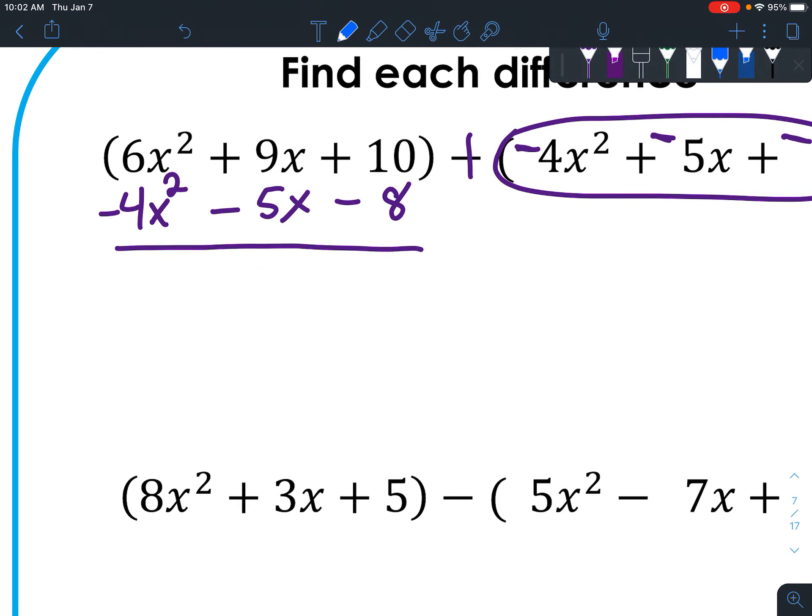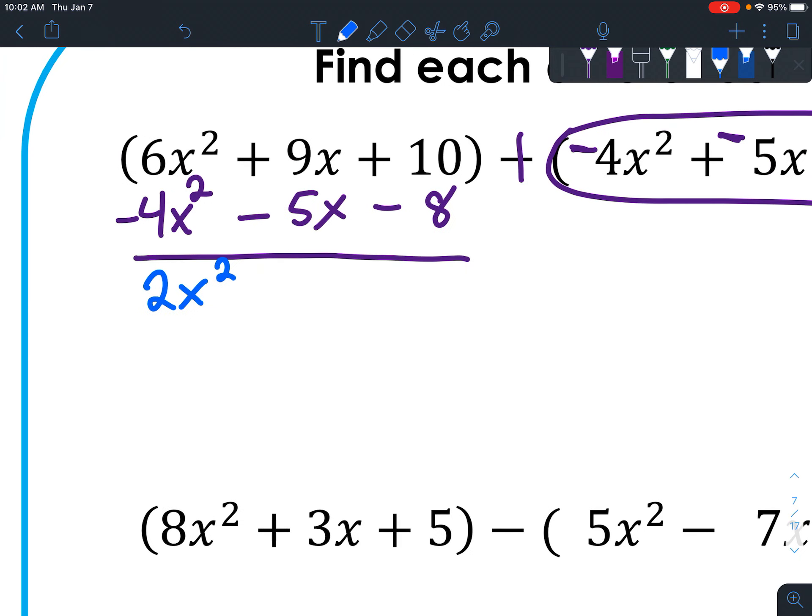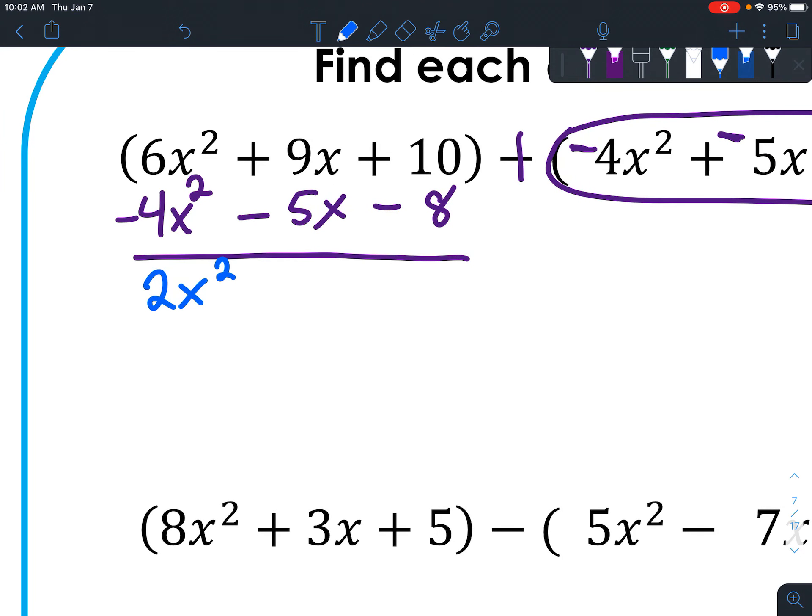And now we can do our adding. If we have 6x squareds and we take away 4 of them, we've got 2 left. And then if we have 9x's and take away 5 of them, we have 4x's. And if we have a 10, take away 8, we have 2.